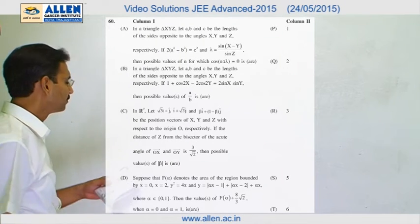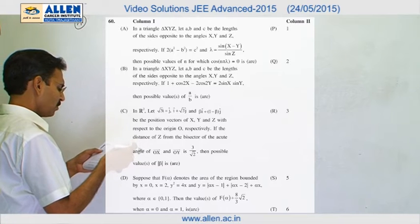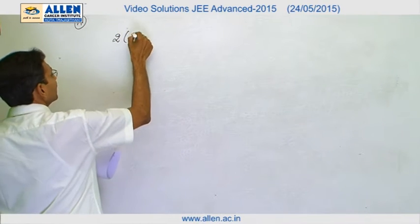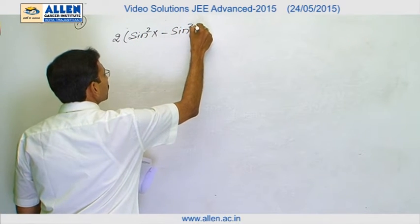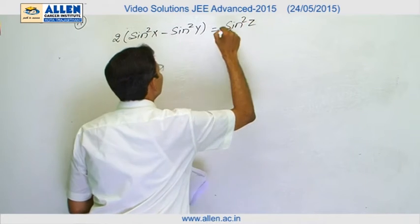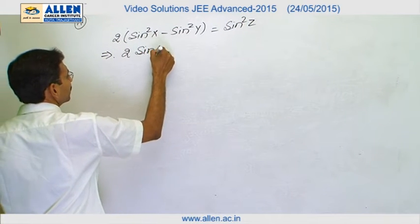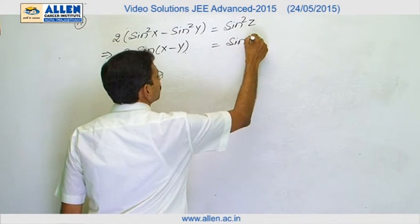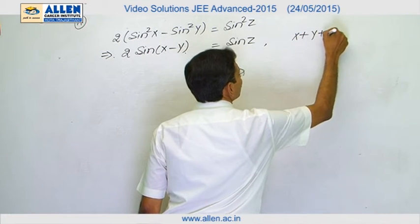Question number 60, part A. It is a regular problem of solution of triangle. We will apply the sine rule and can write it as sine² x minus sine² y equals sine² z. Then I can write it as 2 sin(x-y) · sin(x+y) equals sine² z, and we know that x plus y plus z is π.